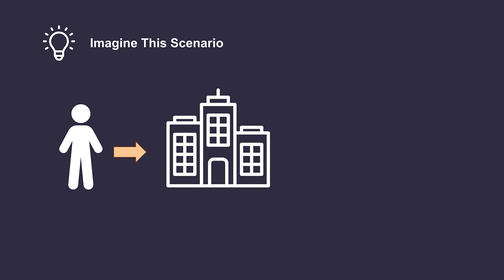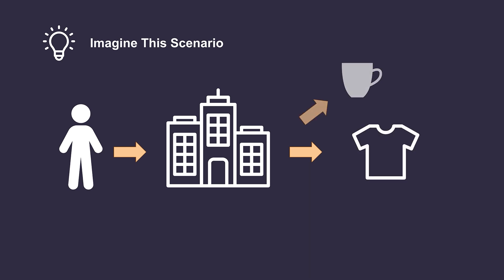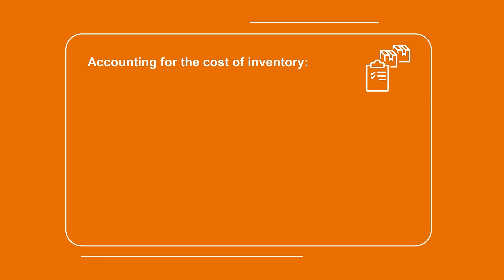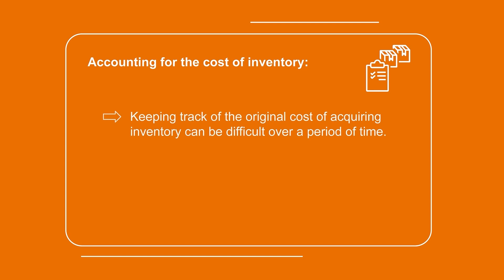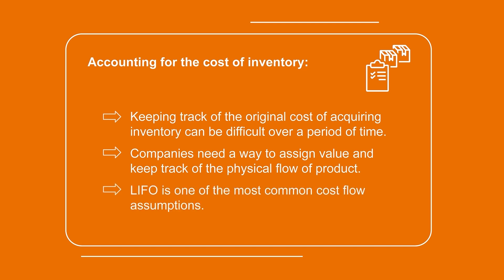Imagine you owned a company that sold merchandise. Every time you made a sale, in order to determine whether you were profitable or not, you would need a way to efficiently track how much you originally spent on that inventory. However, what if you sold thousands of different products and were constantly reordering inventory at many different points throughout the year? It would be extremely difficult to trace back the original cost of each piece of inventory every time a sale was made. Companies that sell inventory need a more efficient and cost-effective way to assign value and monitor the inventory's physical flow. This is why many organizations choose to use cost flow assumptions as an inventory valuation method, with LIFO being one of the most common. Depending on the method they choose, there can be significant implications to the financial statements.